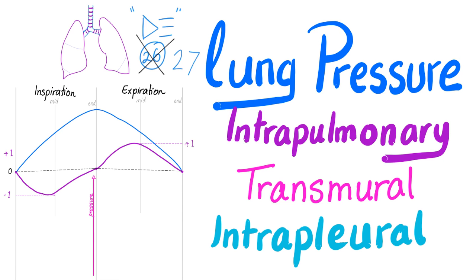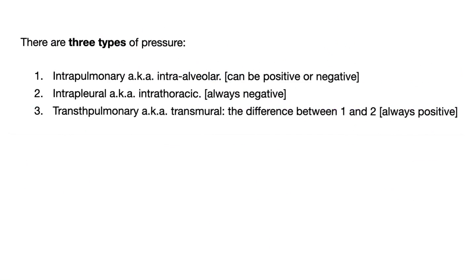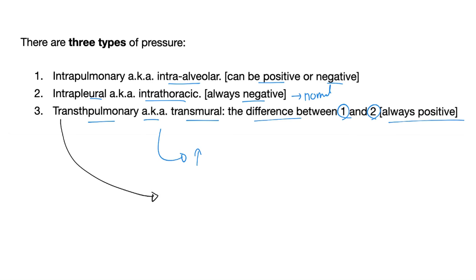We have three types of pressures: intrapulmonary pressure, transmural pressure, and intrapleural pressure. These are really important for you to remember. The intrapulmonary pressure is the pressure in the lung or in the alveoli — this can be positive or negative. The intrapleural pressure is the intrathoracic pressure, which is the pressure between the two layers of the pleura, and this is always negative, in normal people. Transpulmonary, also known as transmural pressure, is the pressure that actually inflates the lung — it's the difference between the two — and this is always positive. Transpulmonary pressure and intrapleural pressure have the same amount but different charges: intrapleural is always negative, transpulmonary is always positive.